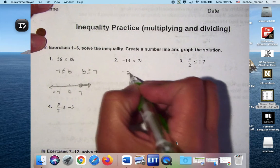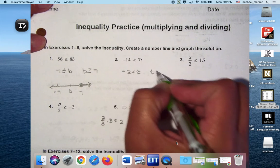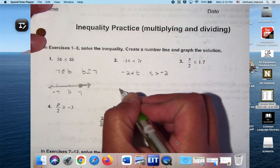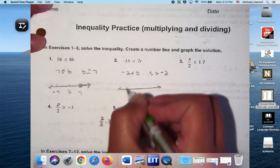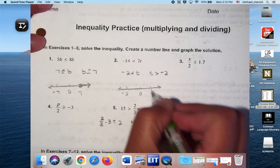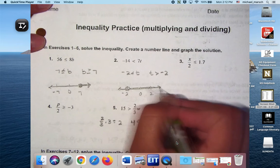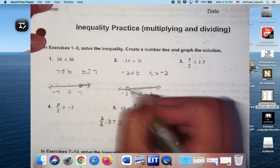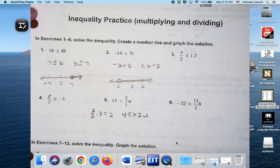Number 8, I got negative 2 is less than T, so I rewrote it as T is greater than negative 2. Open circle to the right. How are we doing on open and closed circles? Good. You guys got it? Expert status?